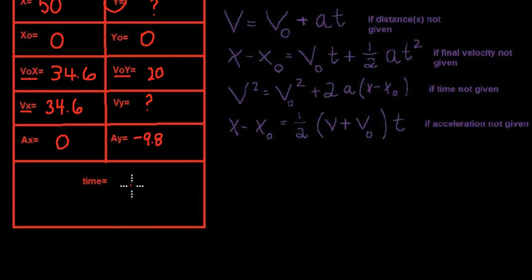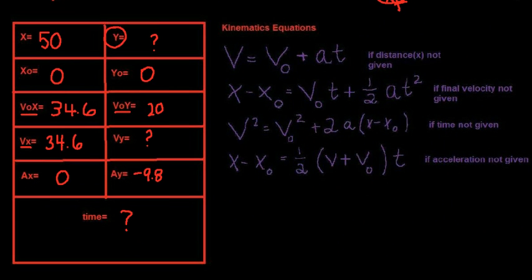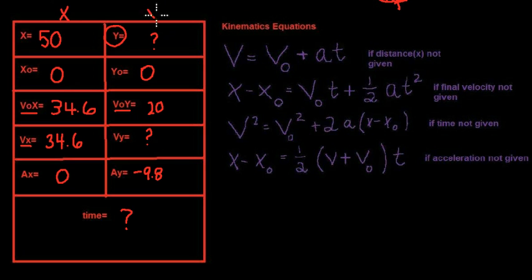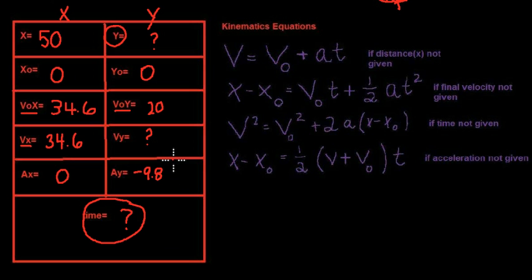The only thing left to find is time. It gets a bit tricky because you want to solve for y, but you don't have the time, the final velocity in y, or the final height. Since we have all of our variables in the x direction, we can use the x component to solve for time, then plug that time back into a y equation to solve for the height.